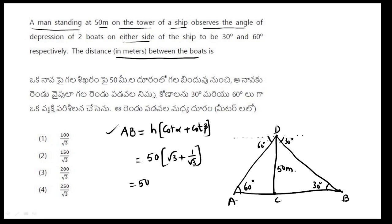Then LCM is going to get root 3 into root 3, 3 plus 1, 4 by root 3, so 50 fours are 200 divided by root 3 is the answer.